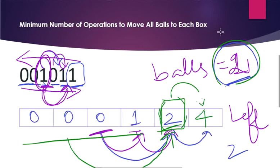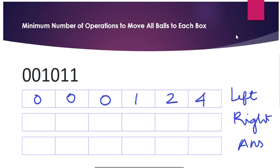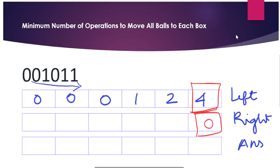Now we've filled our left array. It's time to fill our right array by iterating from right towards left. Since we moved all balls toward the right first, the last position already has the correct value. We initialize balls-so-far as 1 (the rightmost ball), place 0 for the last cell, and start filling from the second-to-last cell leftward.